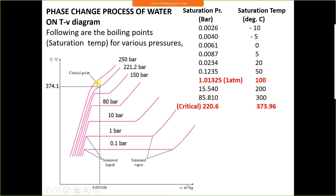As pressure decreases, the amount of sensible heat supplied also decreases. Conversely, as pressure increases, we need to supply more sensible heat but less latent heat.